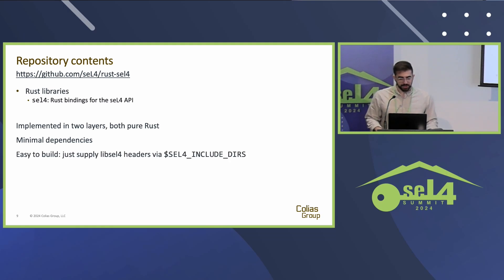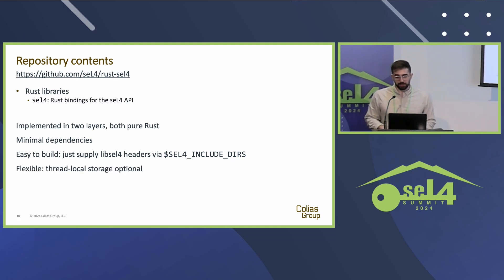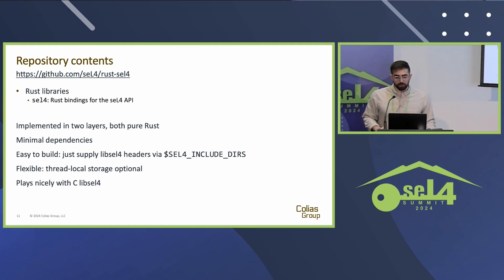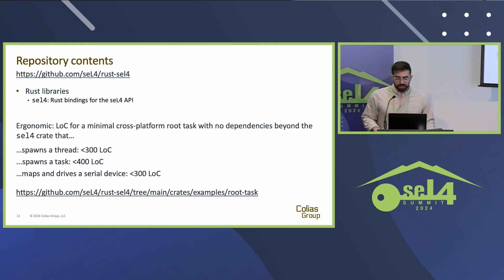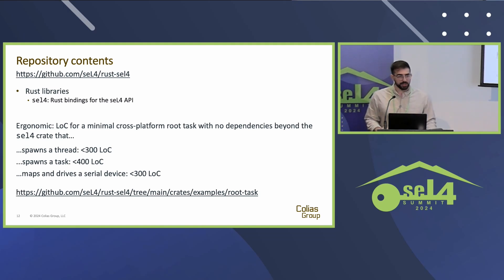The seL4 crate has minimal dependencies and is easy to build — all you have to do is supply Cargo, the Rust build tool, with the libseL4 headers using a single environment variable. It's flexible; for example, you can configure it with or without thread-local storage. And it plays nicely with the C libseL4 in the same executable if necessary for polyglot binaries. I've tuned the types and traits to be as ergonomic as possible using a few example root tasks as guides.